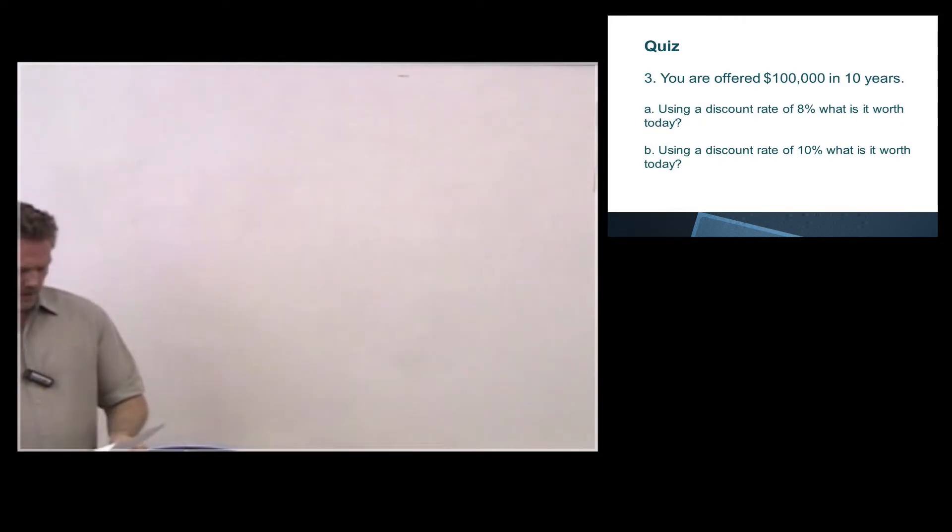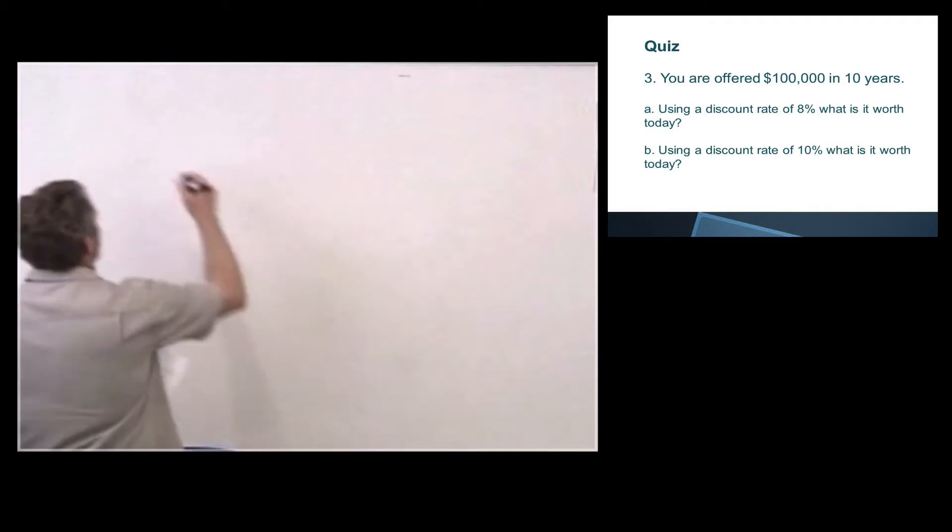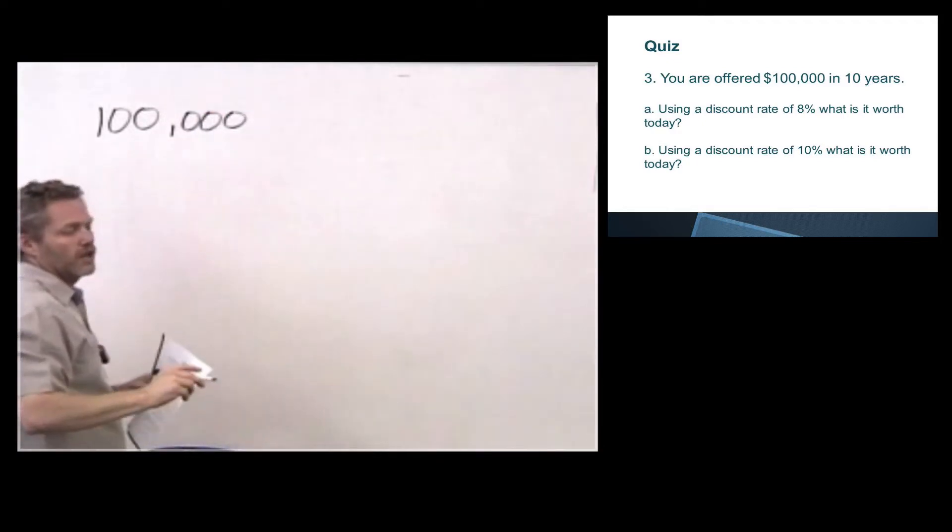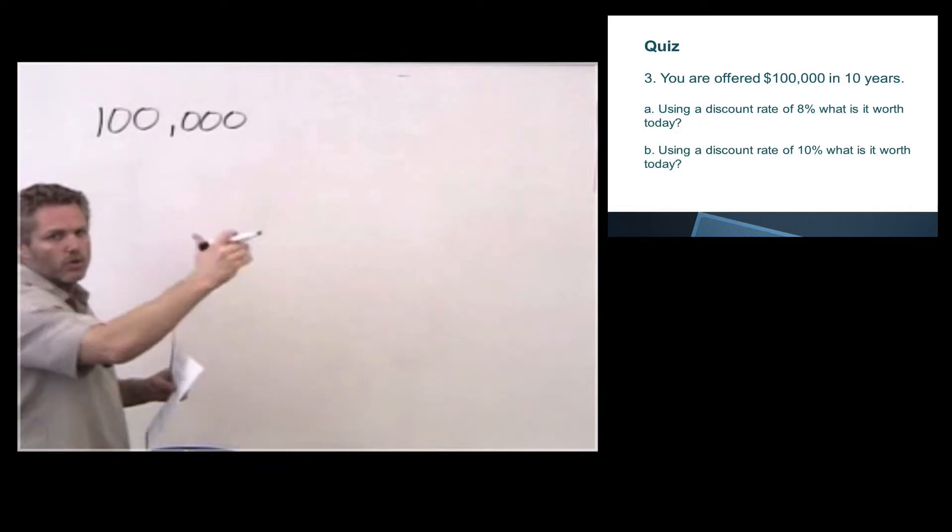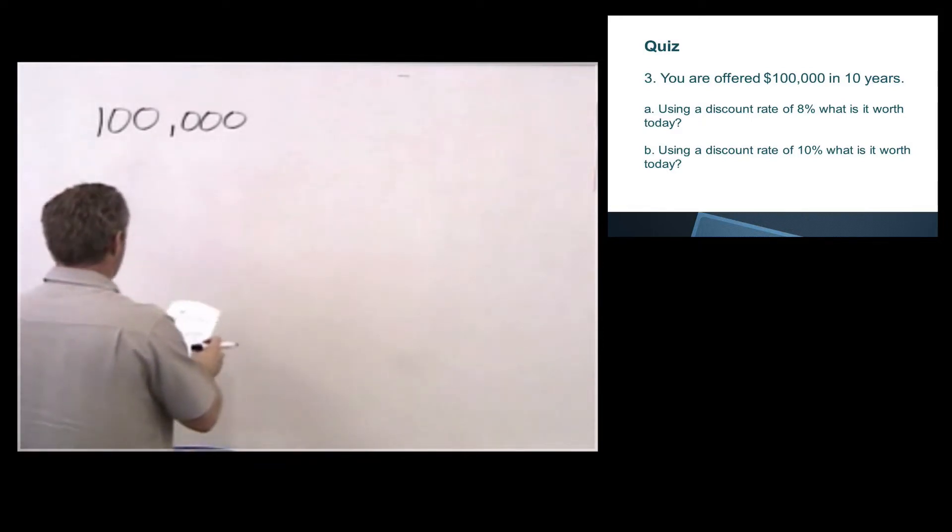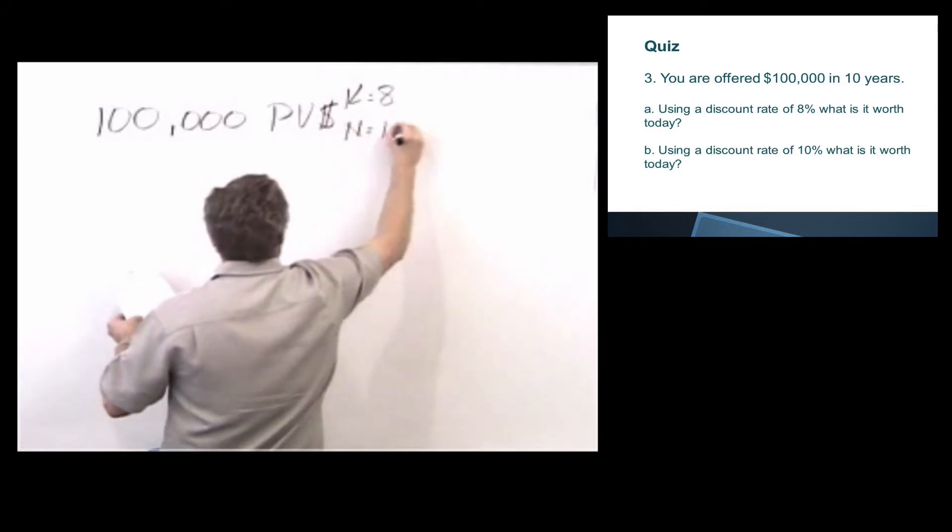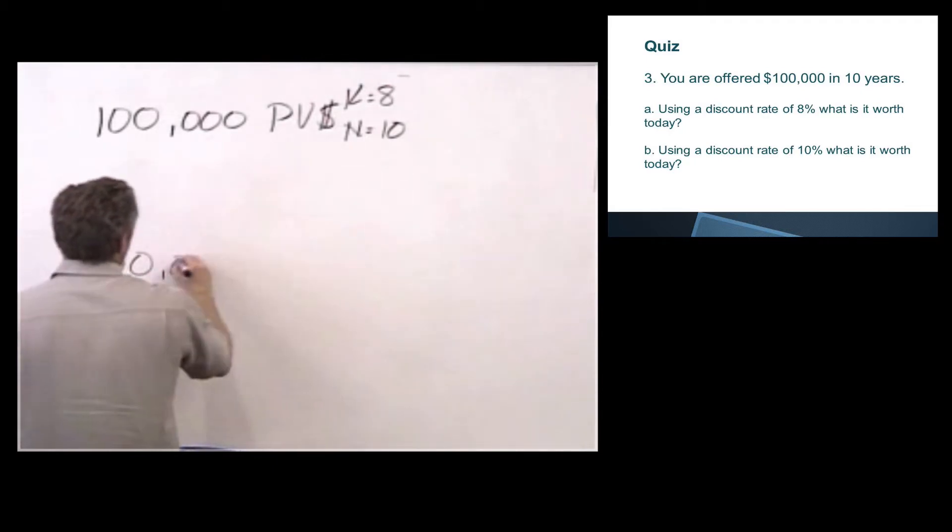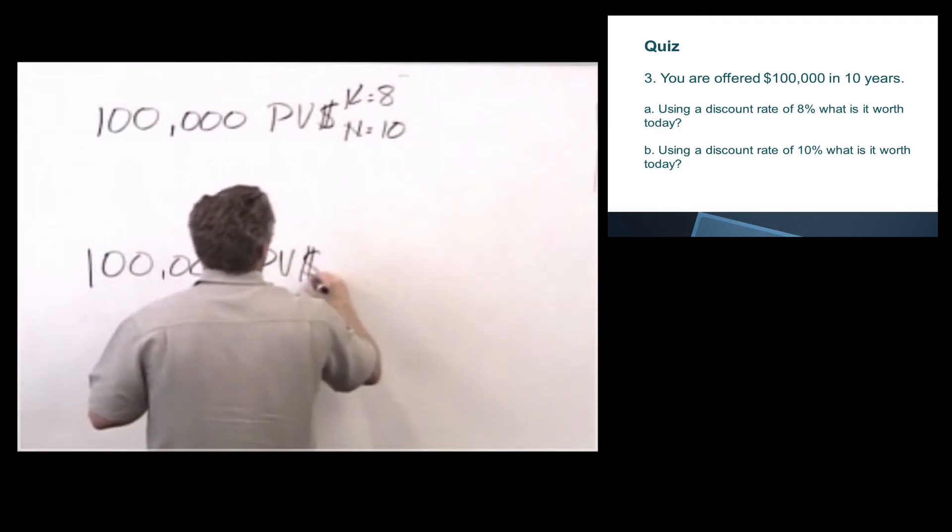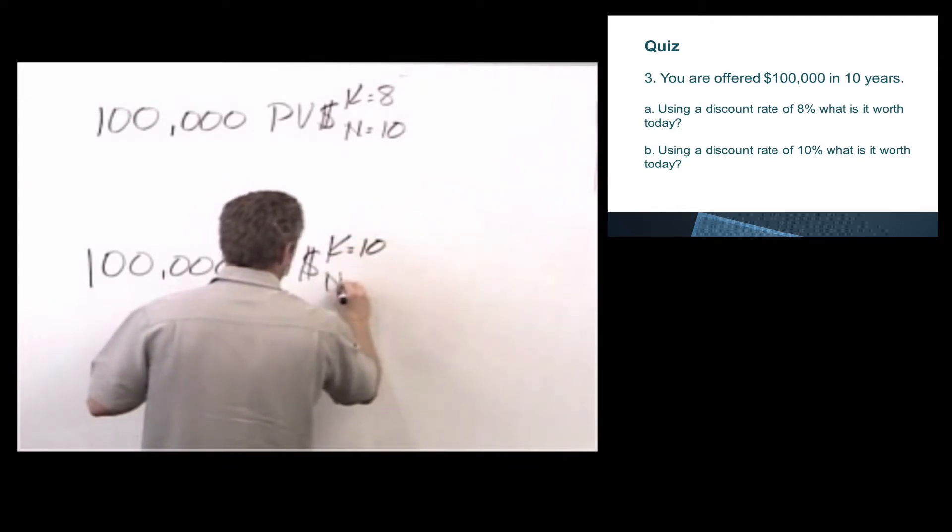Question 3. You're offered $100,000 in 10 years. Using a discount rate of 8%, what is it worth today? And B, using a discount rate of 10%, what is it worth today? So the only thing here that's changing in this question is K. So I'm offered $100,000 in 10 years. I want to know what it's worth today. It's one payment coming to me in 10 years, so we're going to be coming back present value of $1. So present value of $1, K equals 8, N equals 10, and $100,000 present value of $1, K equals 10, N equals 10.